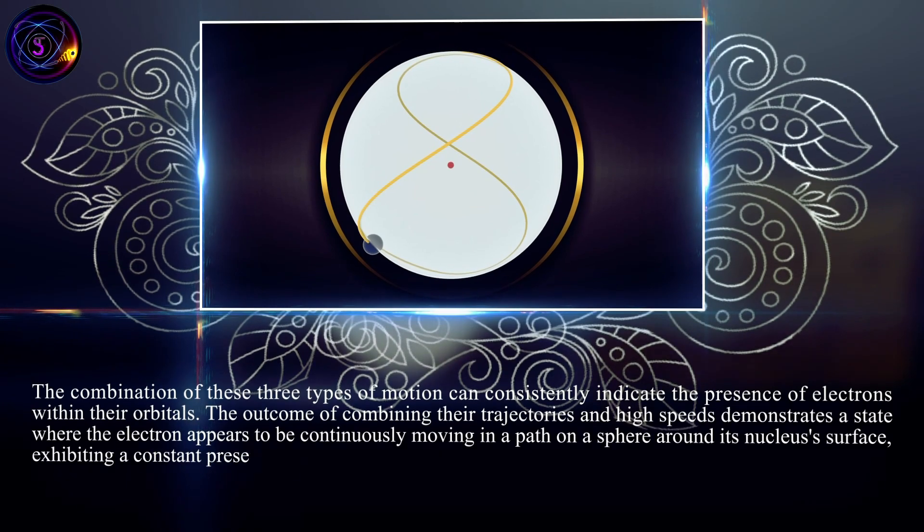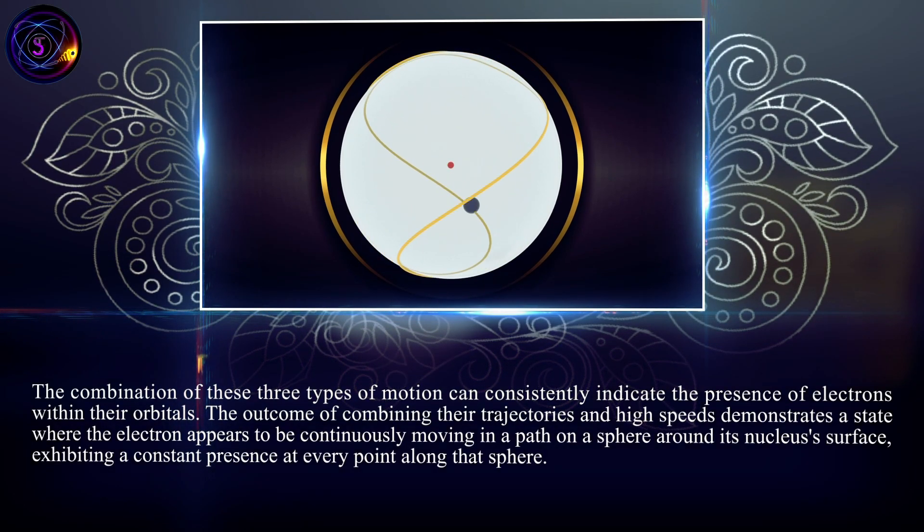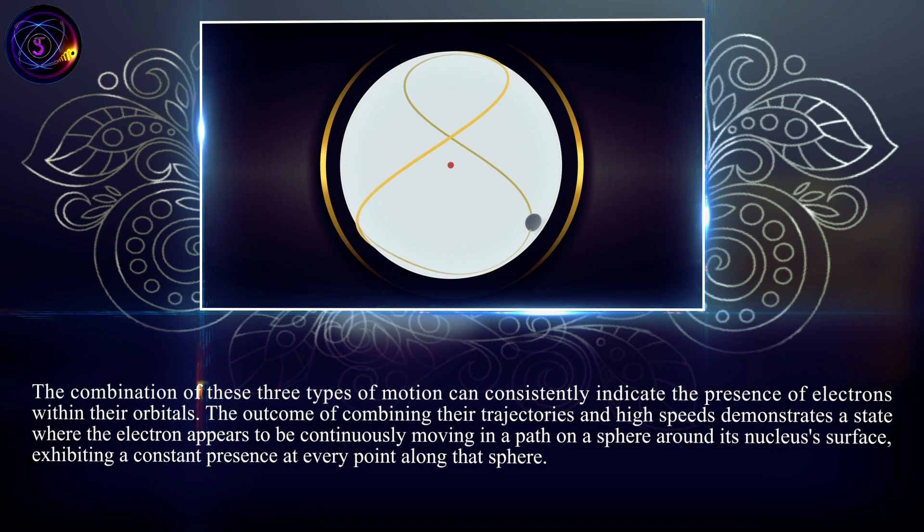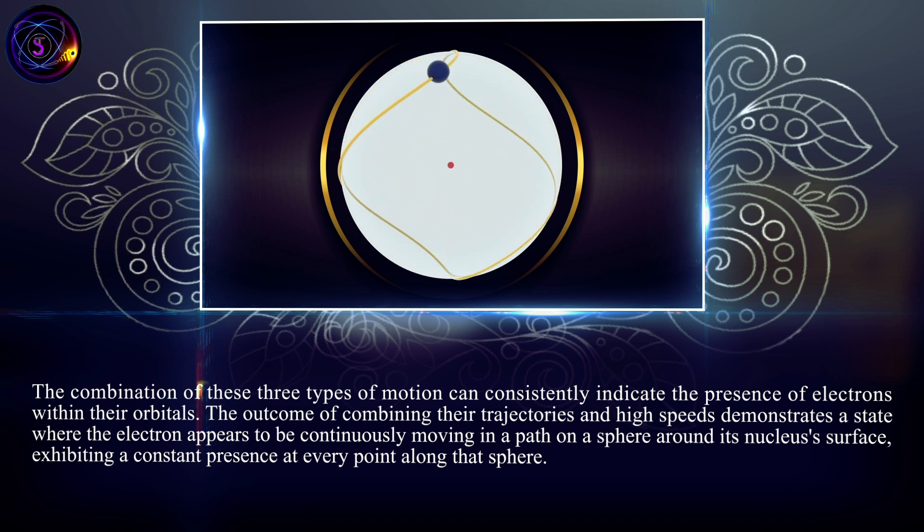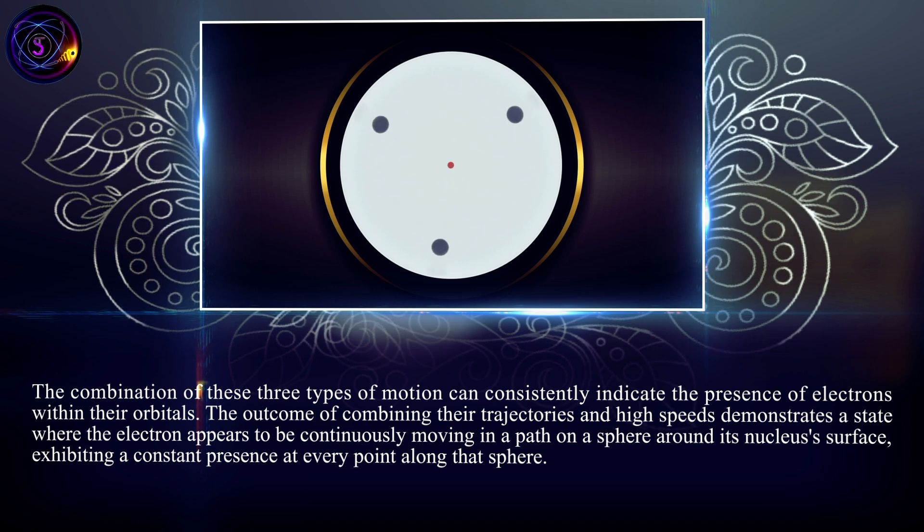The combination of these three types of motion can consistently indicate the presence of electrons within their orbitals. The outcome of combining their trajectories and high speeds demonstrates a state where the electron appears to be continuously moving in a path on a sphere around its nucleus surface, exhibiting a constant presence at every point along that sphere.